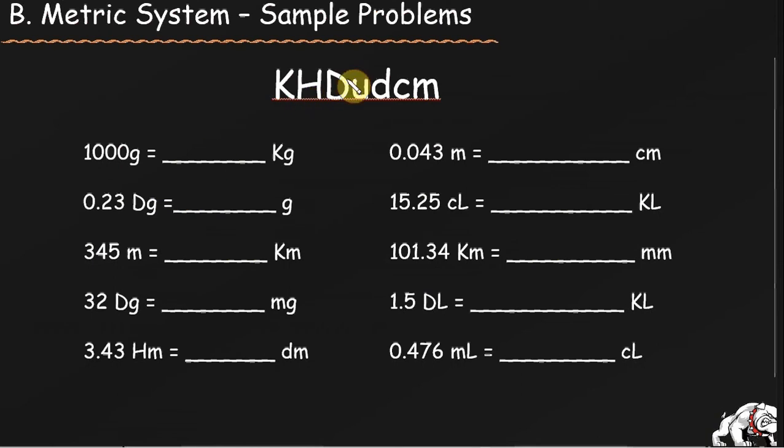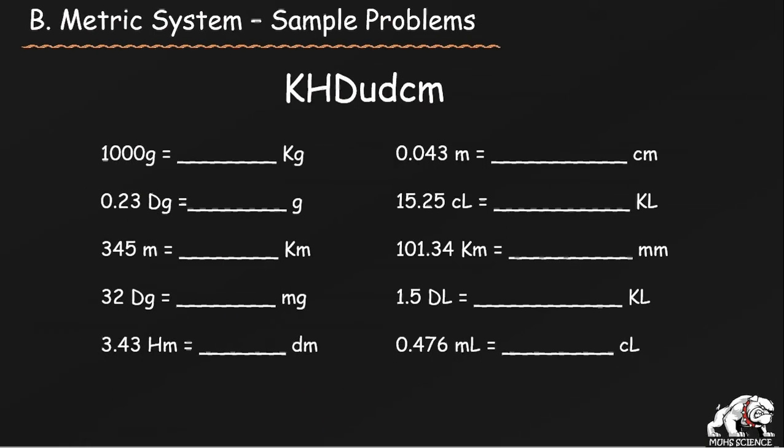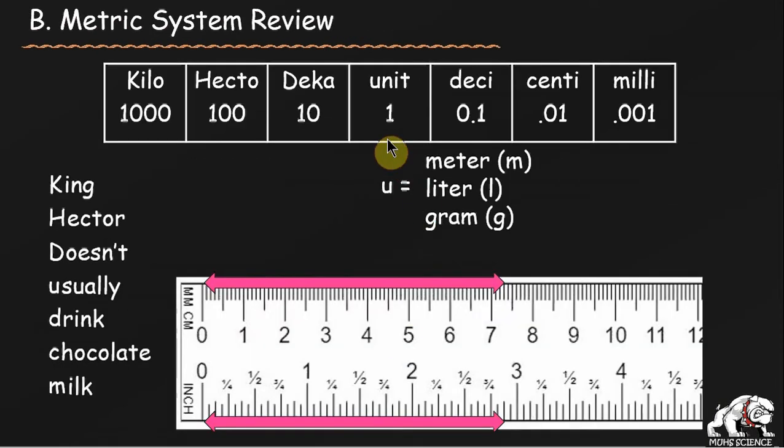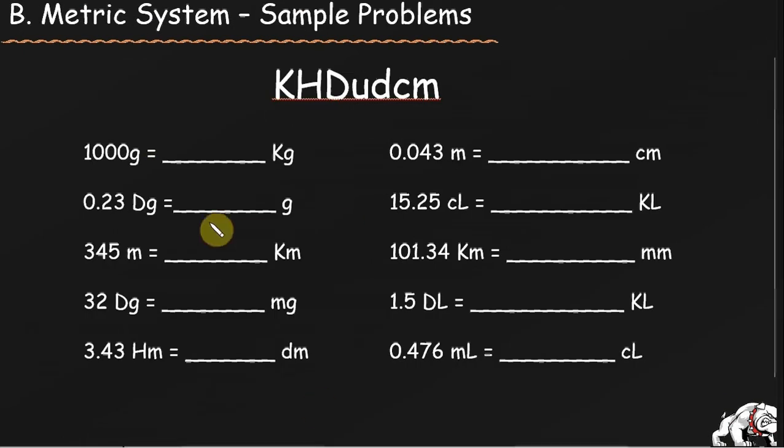How do you use the King Hector doesn't usually drink chocolate milk? You're given 1000 grams equals a kilogram. The first thing you need to figure out is where in the King Hector mnemonic do you start at? Well, I've been given grams. If you remember from the previous slide, the unit is meters, liters, grams - there could be all kinds of stuff, volts, whatever, because you can have centivolts and kilovolts. So the unit is right there in the middle. The unit stands for meters or liters or grams, and that is what we were given. We're starting here at the unit. And I'll mark that in yellow.